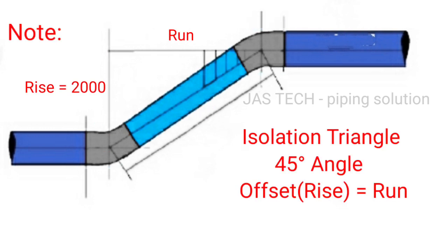Another important note: for an isosceles triangle with 45 degree angle, rise equals run.